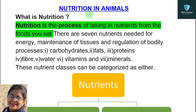Students, today we will discuss nutrition, categories of nutrition, and modes of nutrition. In the next class, we will discuss nutrition in amoeba. So let's start today's topic: nutrition in animals. The first question is: what is nutrition? Nutrition is the process of taking nutrients from the food you eat. This process is called nutrition.